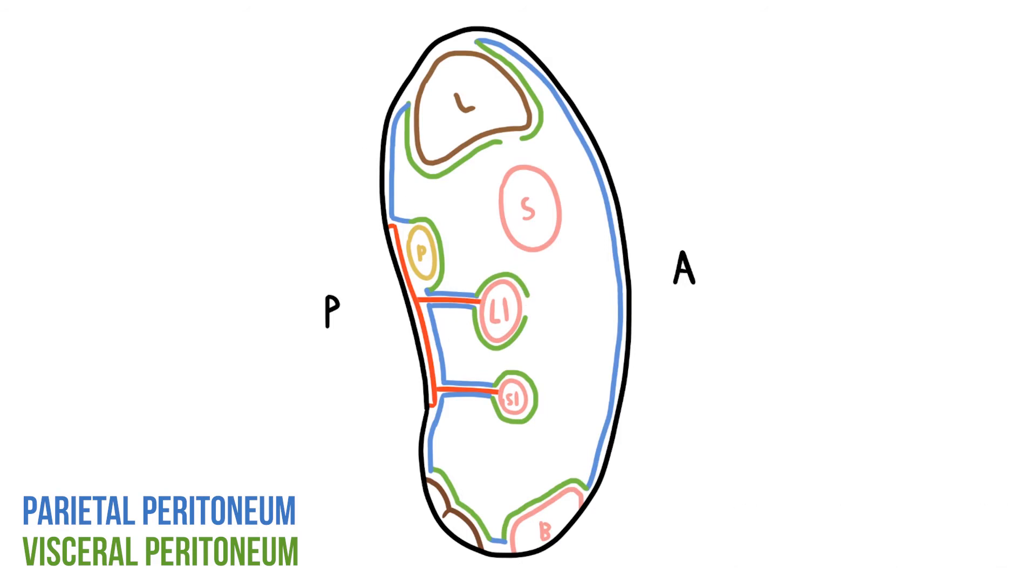These different arrangements of peritoneum allow us to split the organs into two different groups. Some of them only have peritoneum on one aspect and sort of lie behind it. These organs will be retroperitoneal. Other organs are almost fully enveloped by peritoneum and are known as intraperitoneal organs.